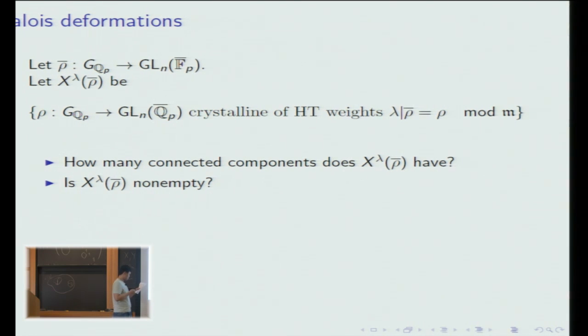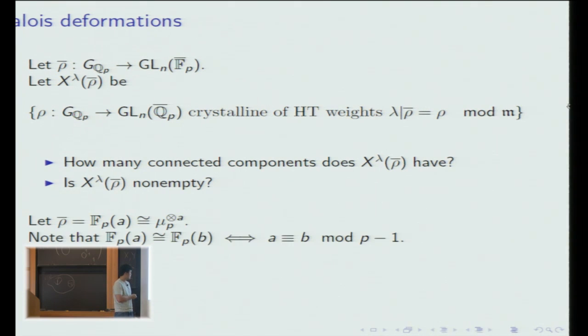Before I move on, let me discuss the case of n equals 1. Let ρ̄ be this one-dimensional Galois representation. You can either think of this as the reduction of Z_p twisted by a, or more concretely, it's just μ_p to the tensor a power as a Galois module.